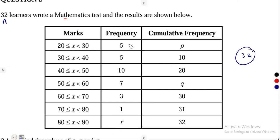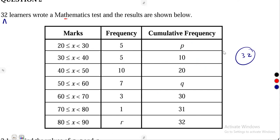The cumulative frequencies are not just a pattern — they are calculated by continuous addition from one class to another. The first frequency given is 5; since there is no previous class, it is simply 0 plus 5, which gives us 5. So automatically, P is equal to 5.